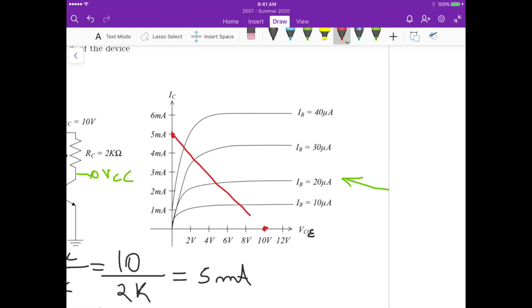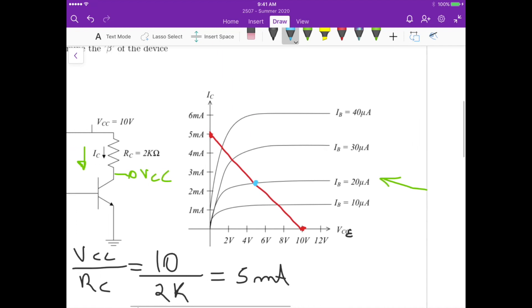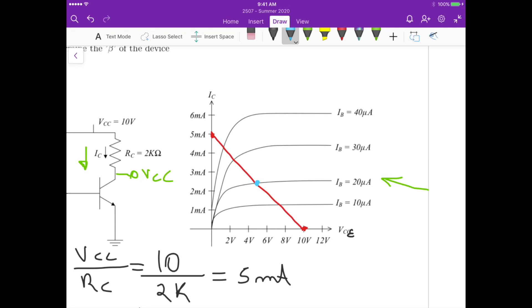And now we can find out the quiescent point at the point of intersection between the load line and the IB curve that we have, the base current curve. So if we then trace a straight line down here and a straight line at this side here, we can figure out the value of the quiescent point.